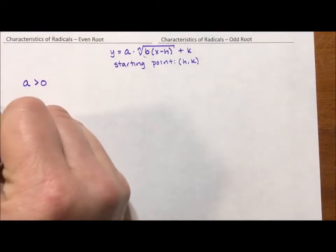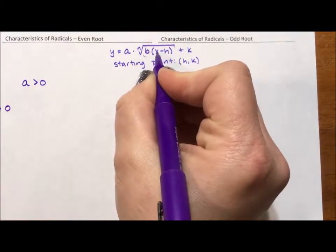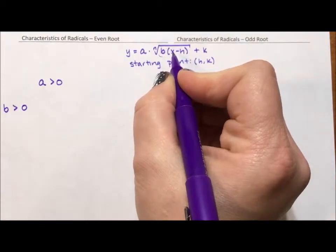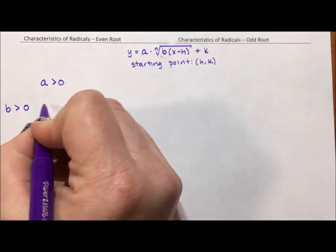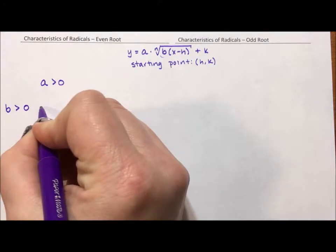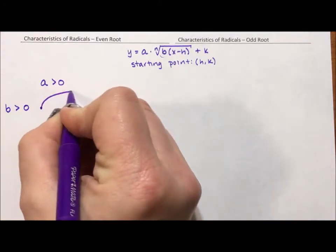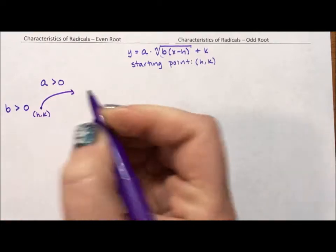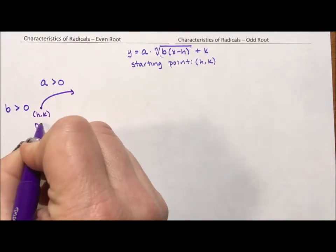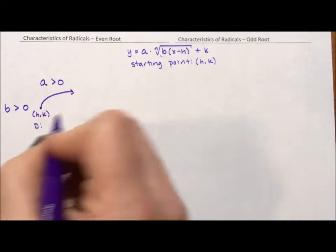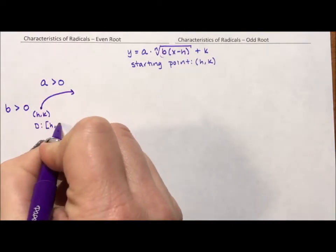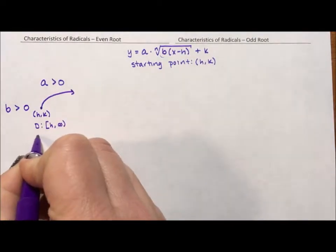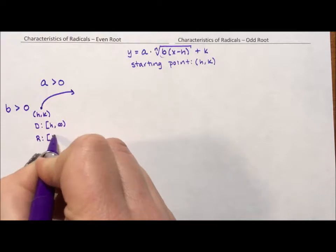And if b is positive, b is defining x, x also has to go in the positive direction. So if they're both positive, we have a starting point here and we have both of our directions going positive with our starting point of (h,k). The domain is going to go from h to infinity and our range is going to go from k to infinity.